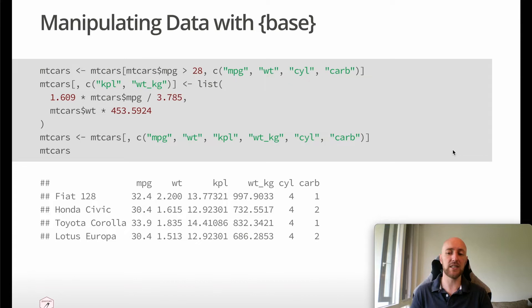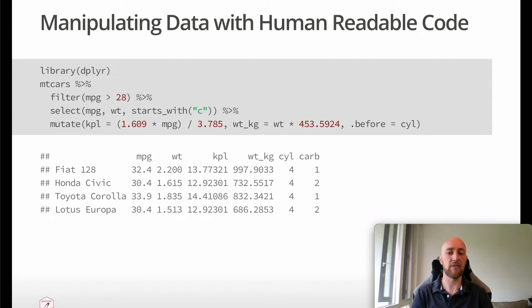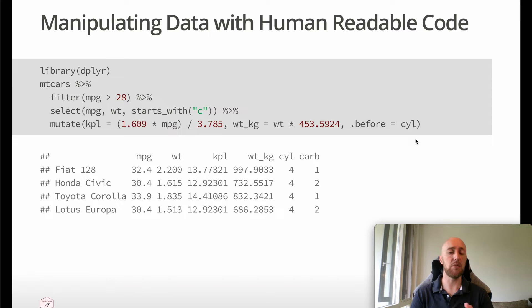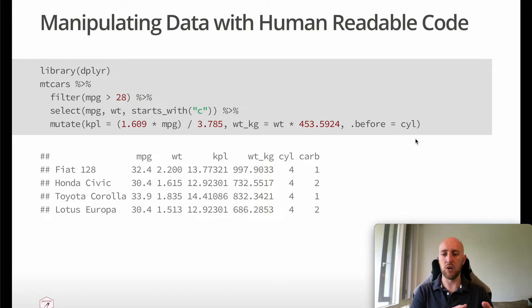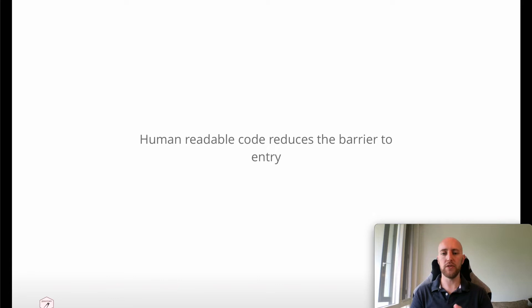Speaking of which, let's take a look at the dplyr alternative. Here I have the exact same result — I start off with my dataset mtcars, then I filter the rows, select some columns, and create some new columns. This offers a human-readable API, and this is one of the key points that Pawman tries to recreate. It's ultimately what makes dplyr so popular — it really breaks down that barrier to entry, especially with great initiatives such as TidyTuesday, which offer examples of different datasets and give you the opportunity to learn from other people. Human readable code reduces the barrier to entry — this is the first key point I want to make today.